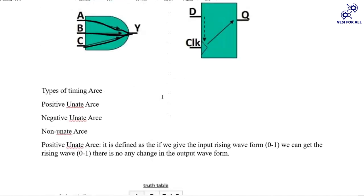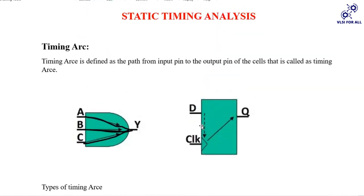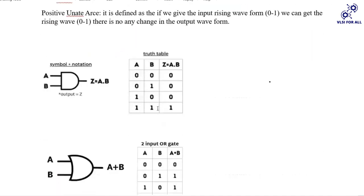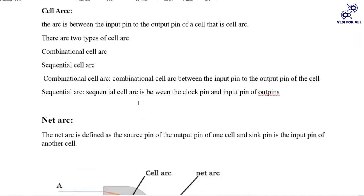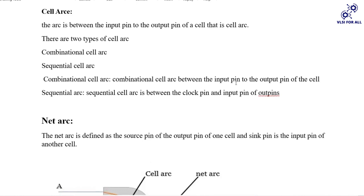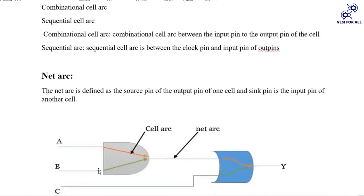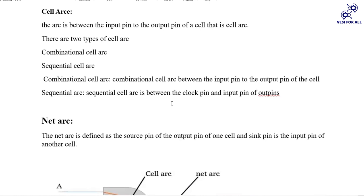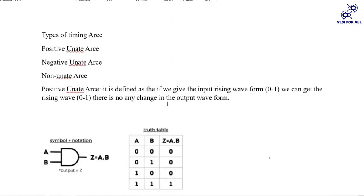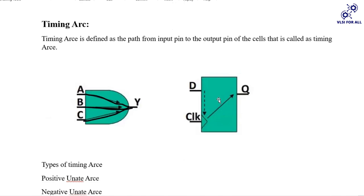Sequential cell arc means the path from D to clock, or clock to Q. The combinational cell arc is between the input pin and the output pin of a cell. The sequential cell arc is between the clock pin to either the input pin or the output pin — that is the timing arc for a sequential cell, i.e., a flip-flop.